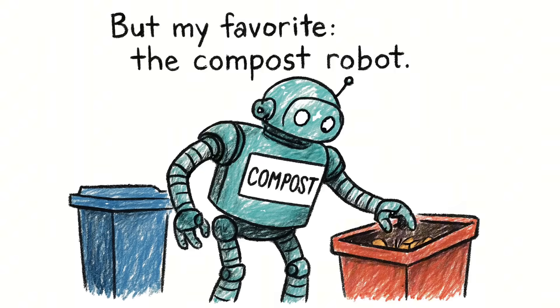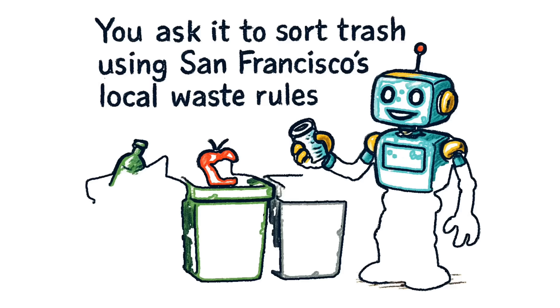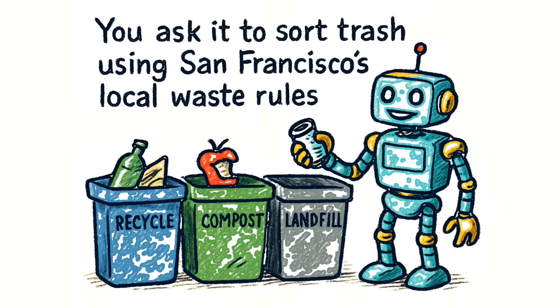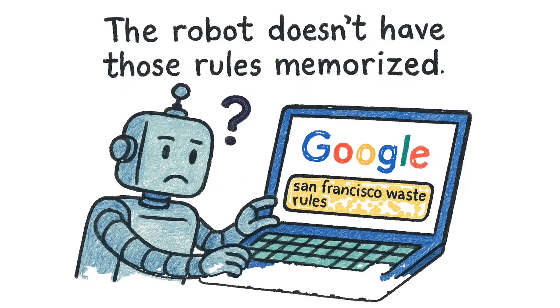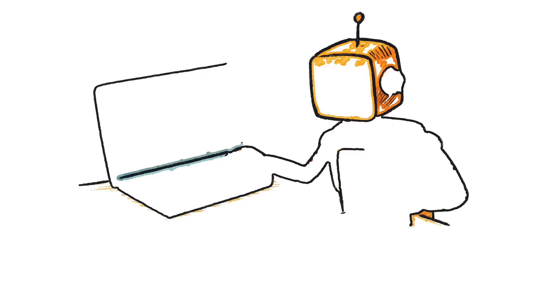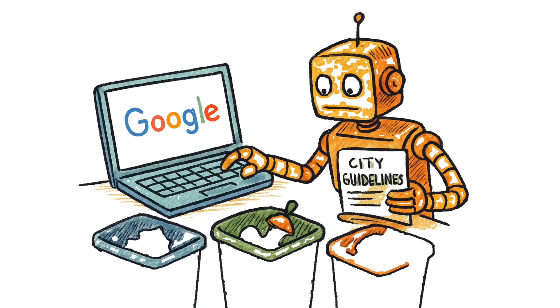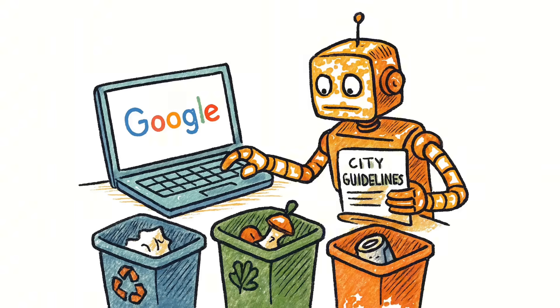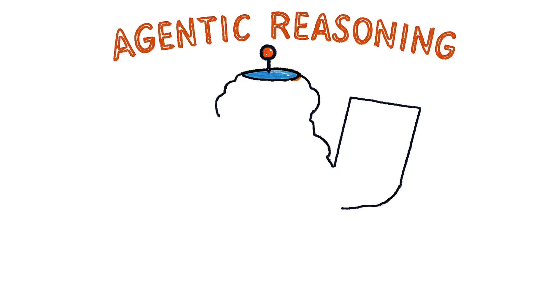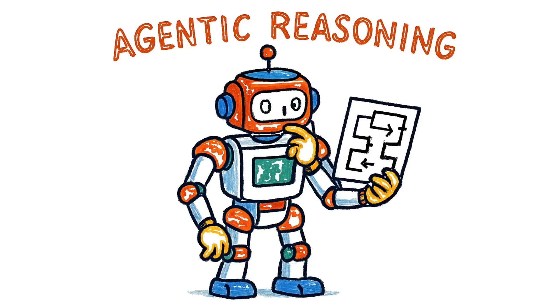But my favorite? The compost robot. You ask it to sort trash using San Francisco's local waste rules. The robot doesn't have those rules memorized. So what does it do? It Googles them. Pulls up the city guidelines, reads them, then sorts accordingly. This is not scripted behavior. This is agentic reasoning in a robot body.